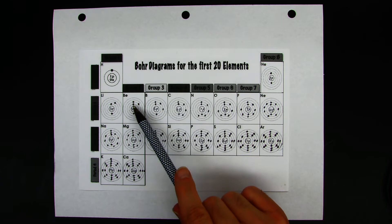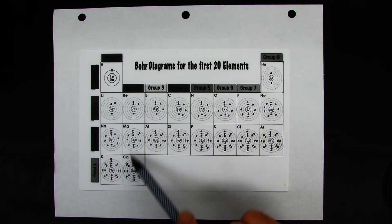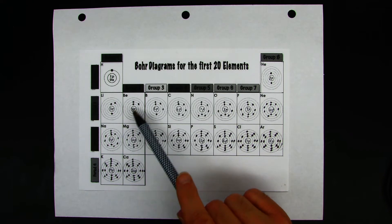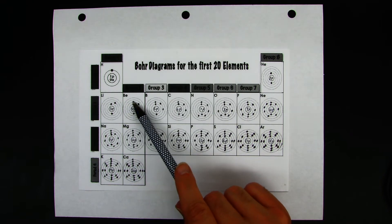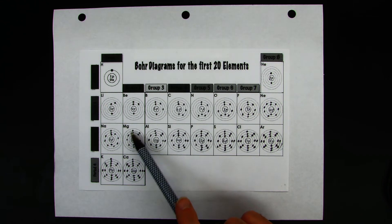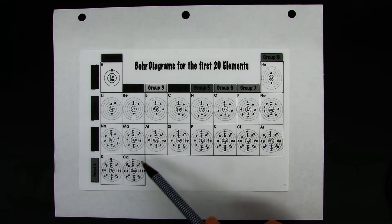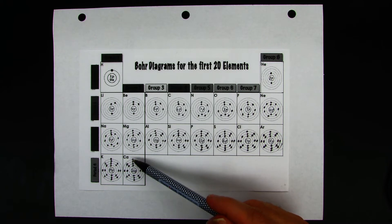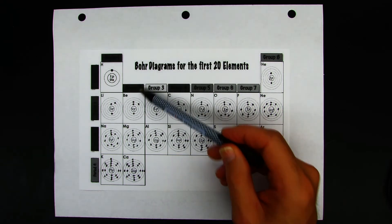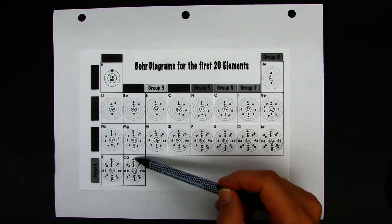If we move over to group two, you'll notice that what these atoms have in common is that they have two electrons in the outermost shell. For beryllium, the second energy level has two electrons. The outermost shell for magnesium is the third one, which only has two electrons. And for calcium, its outermost electrons are in the fourth shell, so the outermost shell is the fourth energy level — and it only has two. So group two elements only have two electrons in their outermost shell.